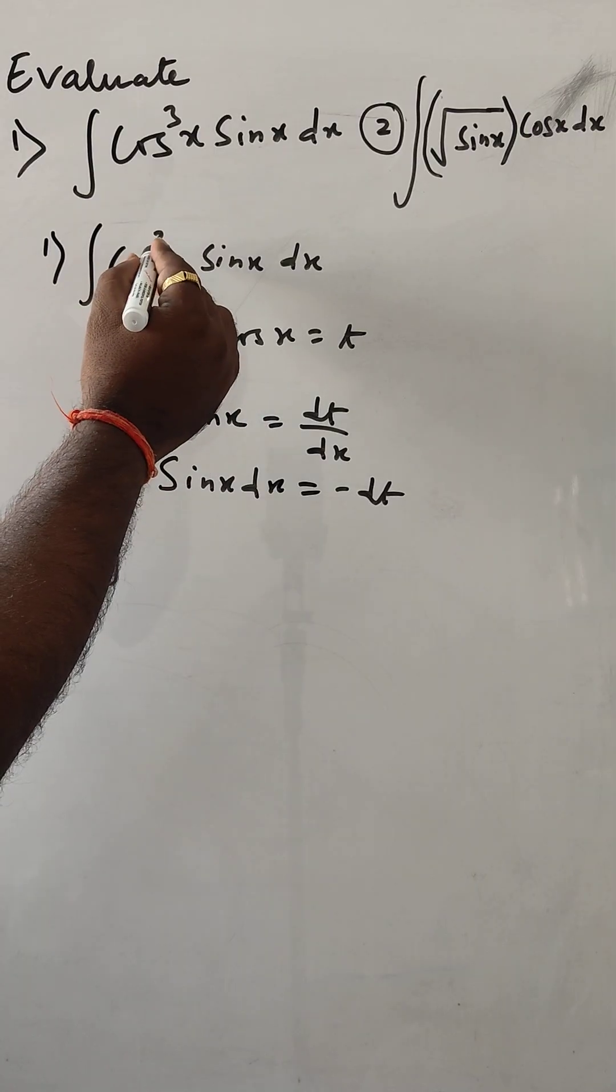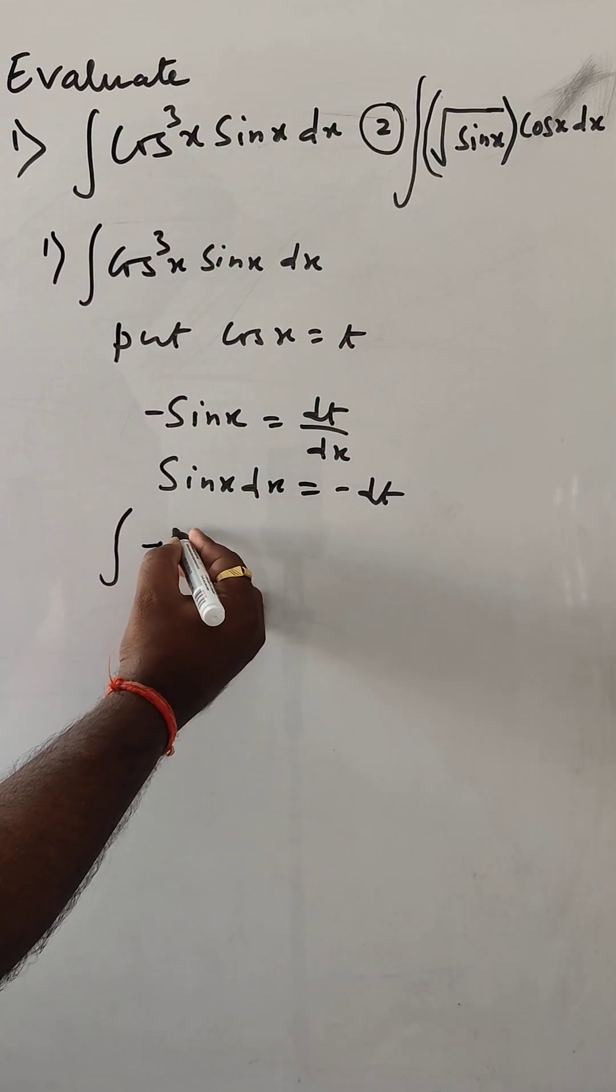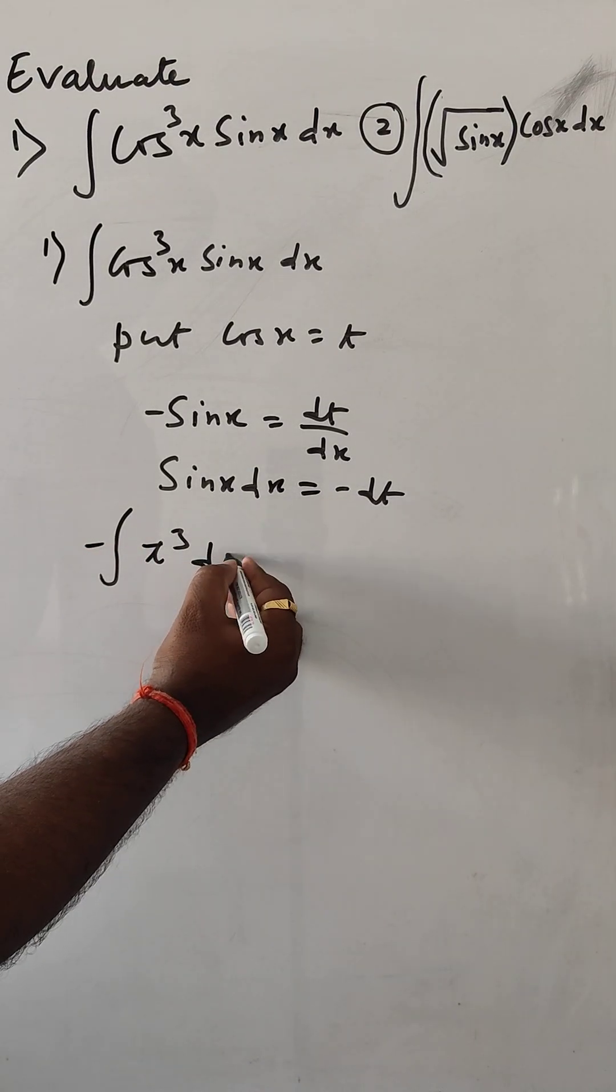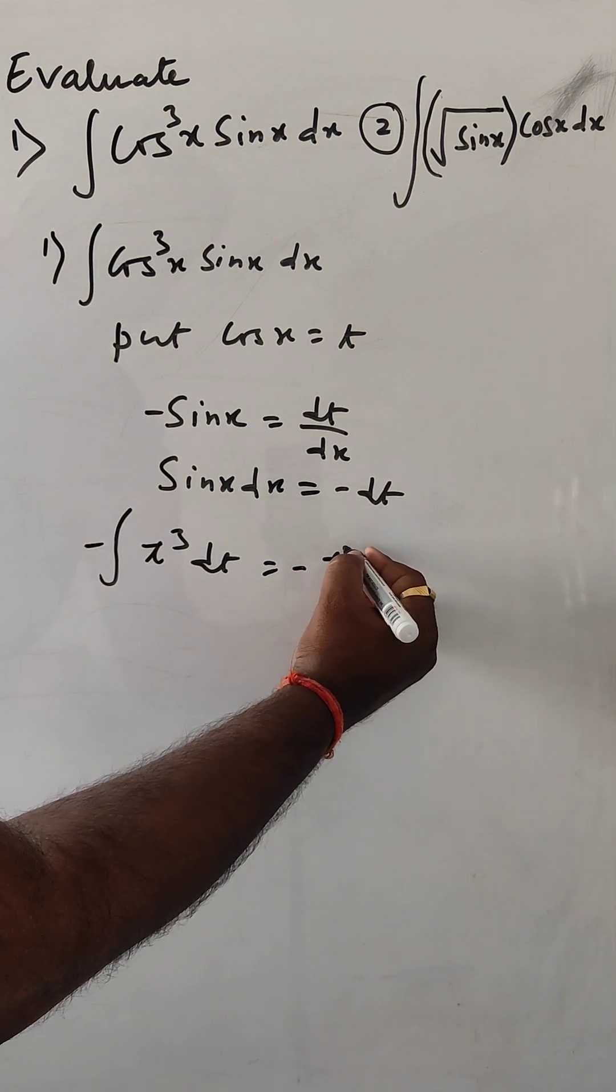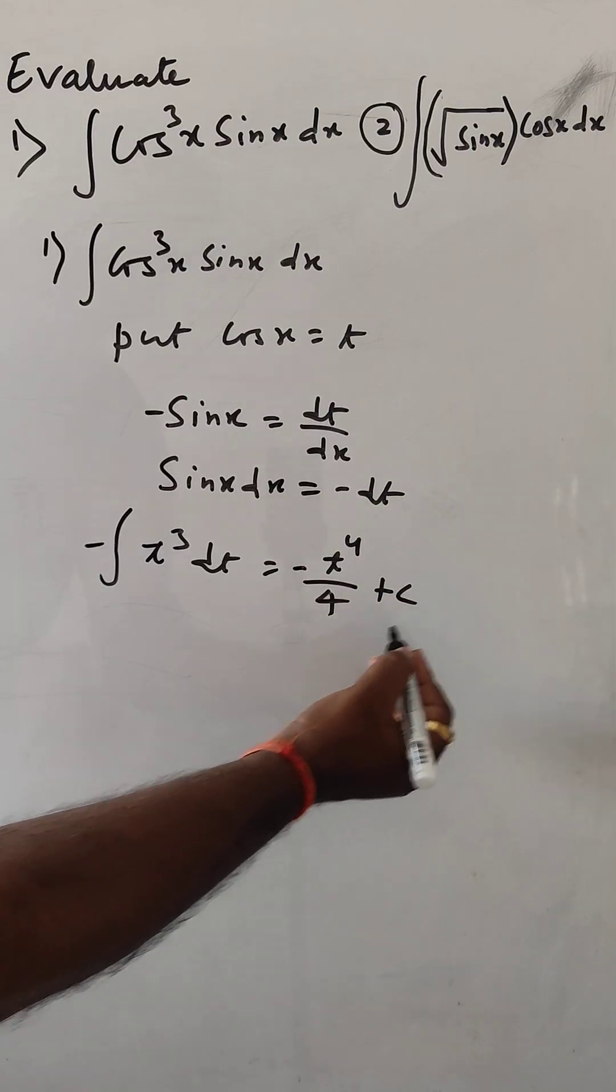And for cos x, put t with power q, so t^q. Put minus here and dt. So here minus t^4 divided by 4 plus C.